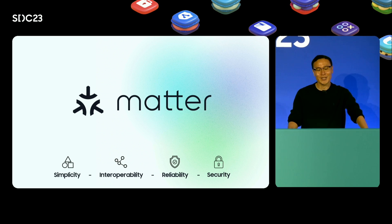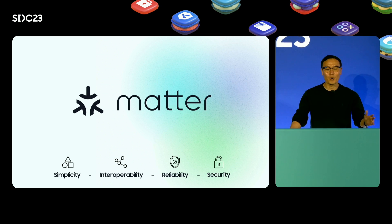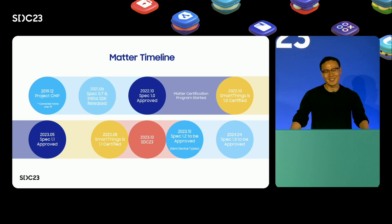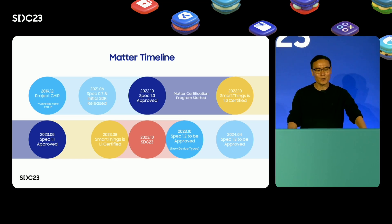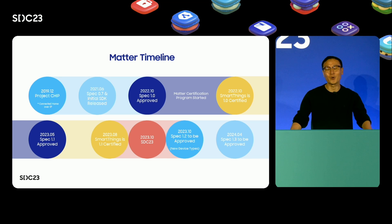Matter is an IP-based protocol that helps smart home devices talk together easily. You can buy and set them up simply; they work well together, are dependable and secure. From when it started in 2019 — it was first called Project CHIP — we've worked hard on it for three years and launched it worldwide last year.